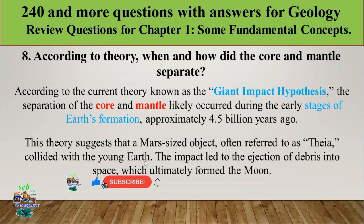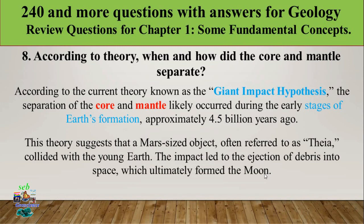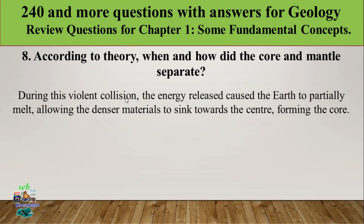This theory suggests that a Mars-sized object referred to as Theia collided with the early Earth. The impact led to the ejection of debris into space, which ultimately formed the Moon. During this violent collision, the Earth partially melted, allowing denser materials to sink toward the center, forming the core.